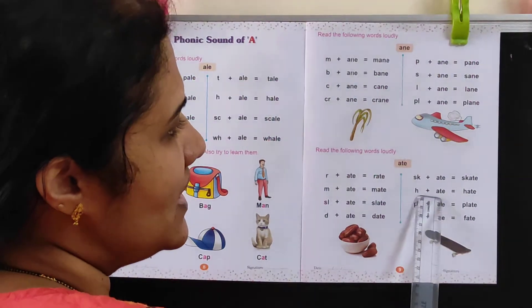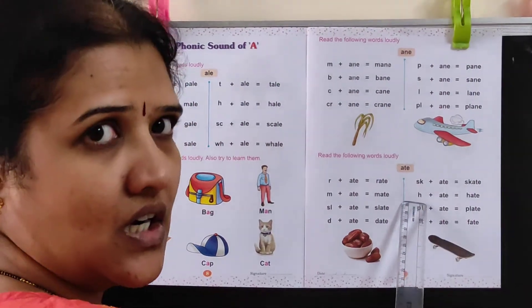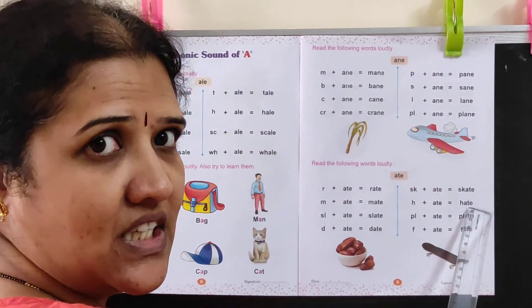Then H and ate. What is the sound of H? H-H-H-A-T, Hate. H-A-T-E, Hate.